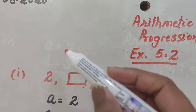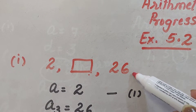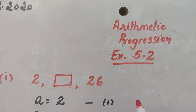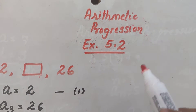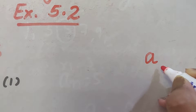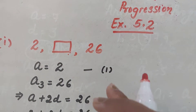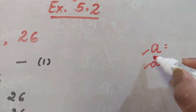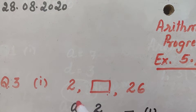As you can see, this is an AP - arithmetic progression. You are given the first term, second term is missing, and third term is given. Whenever you are solving any problem based on arithmetic progression, two things you must find first: one is 'a' and the other one is 'd'. If you can find them from the AP directly, that's fine; if not, you need to find 'a' and 'd' first, and once you know both, you will be able to find the answer to any question.